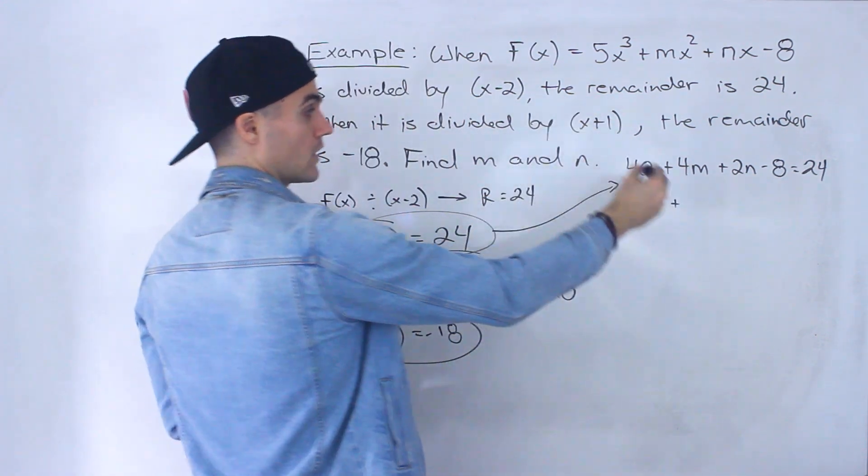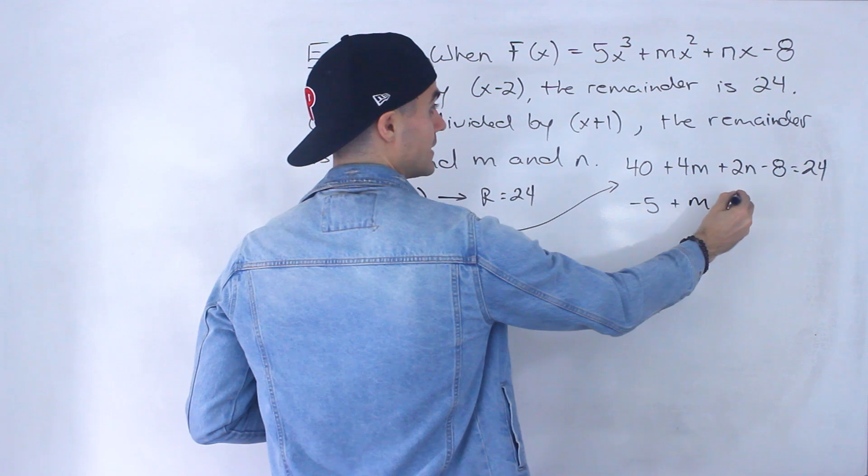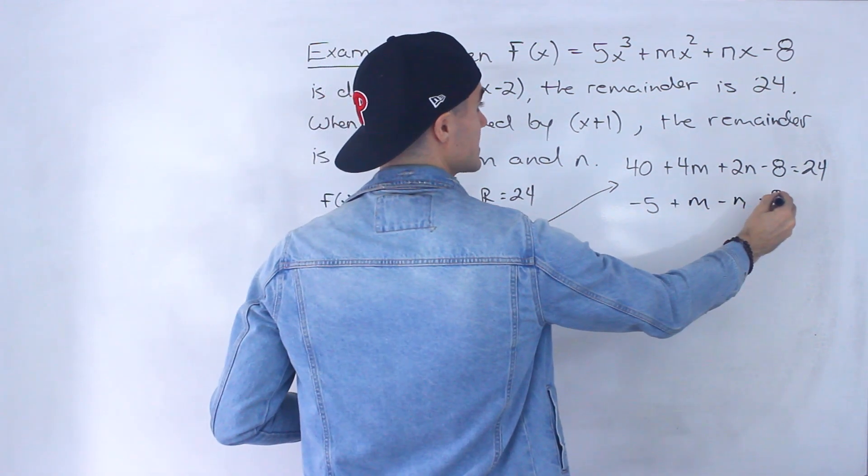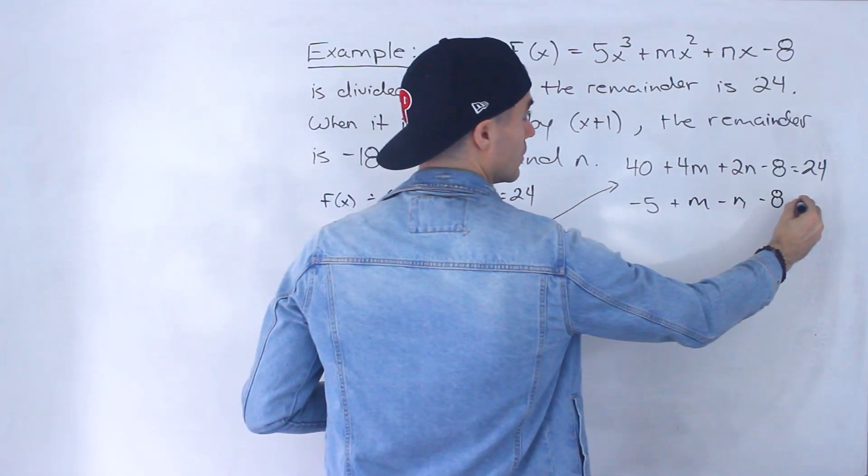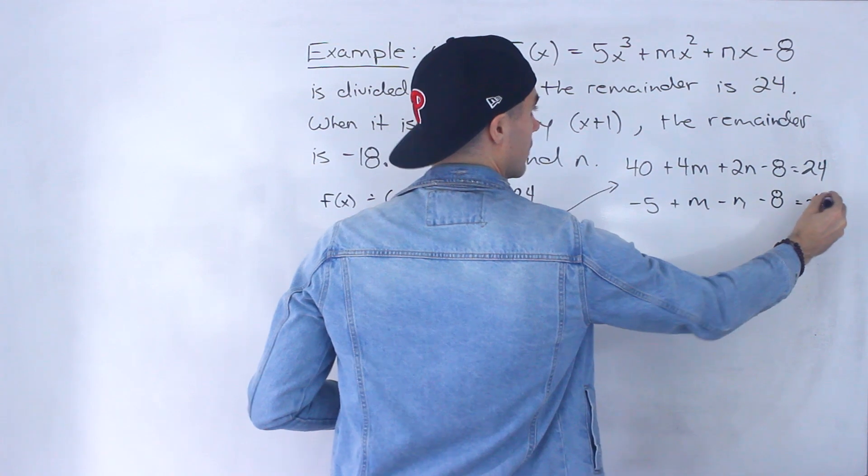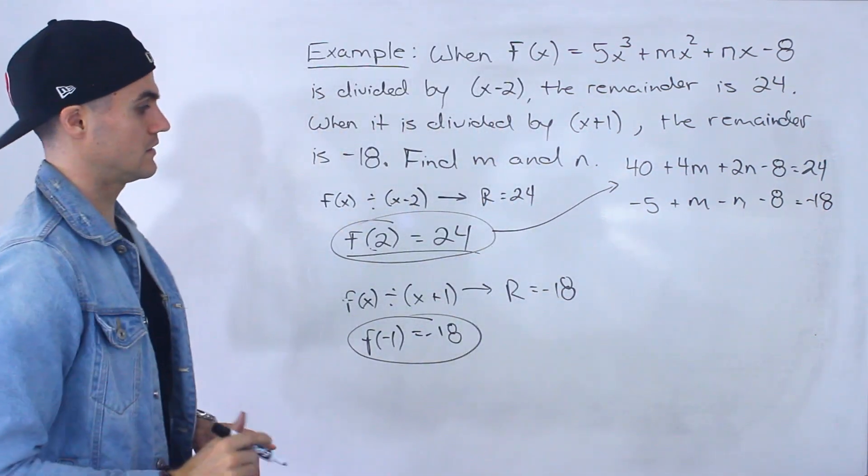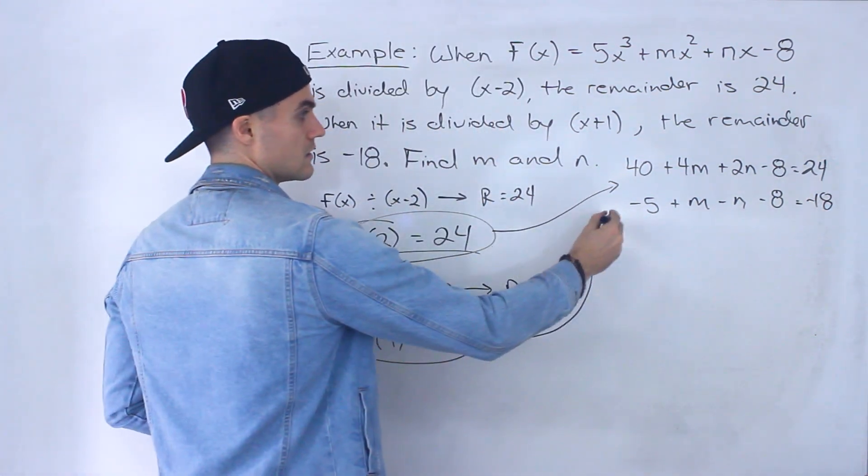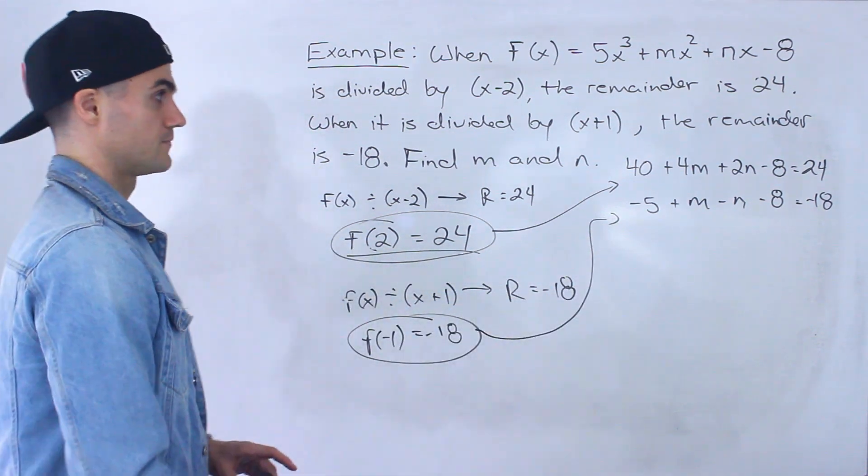Negative 1 to the power 2 is 1 plus m minus n minus 8 has to equal negative 18. Like that. So I took this and made that equation right there.